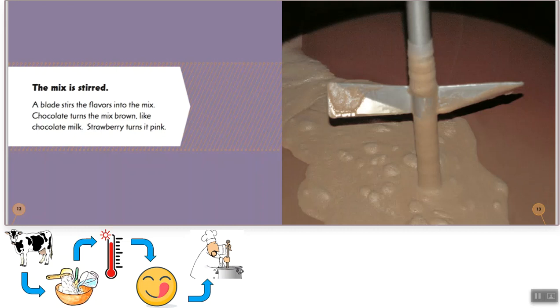Then the milk is stirred. A blade stirs the flavors into the mix. Chocolate turns the mix brown like chocolate milk. Strawberry turns it pink. So we went from milk to adding sugar to heating it up to adding yummy flavors and now we're mixing it up. So you can see my sequence of events continue on the bottom.